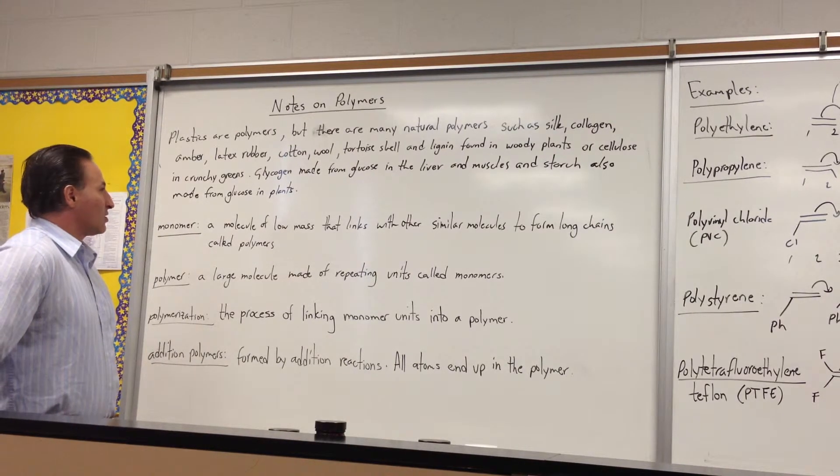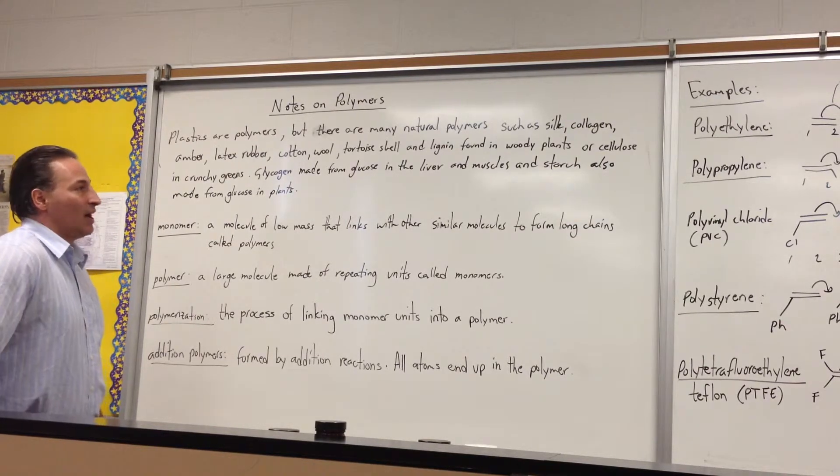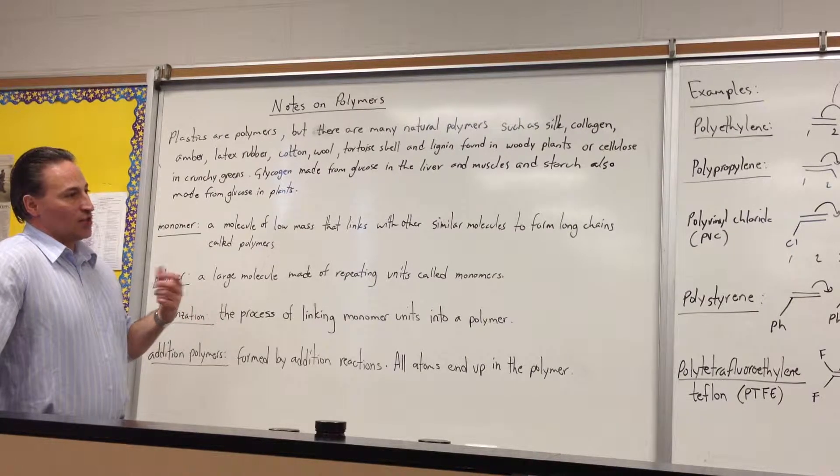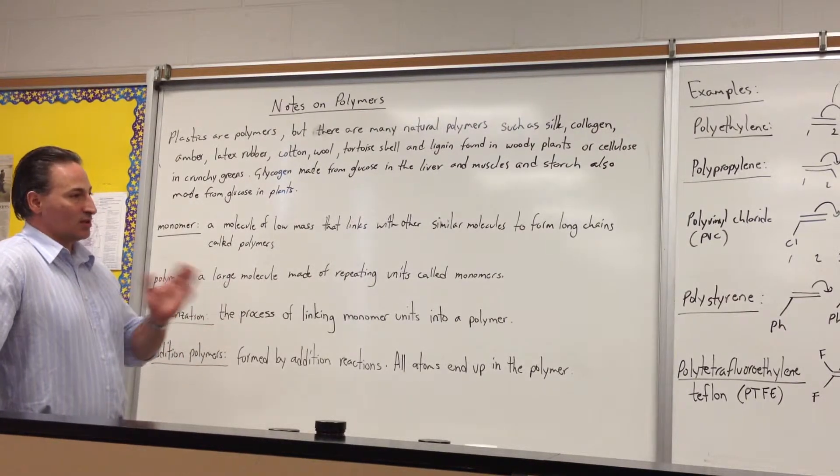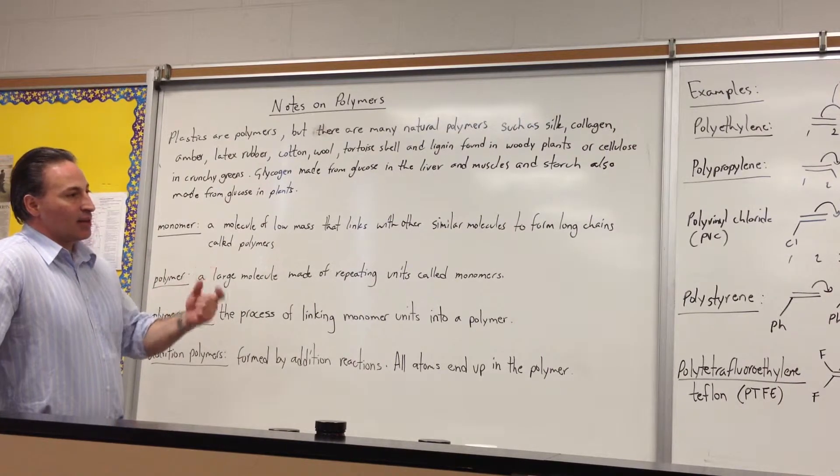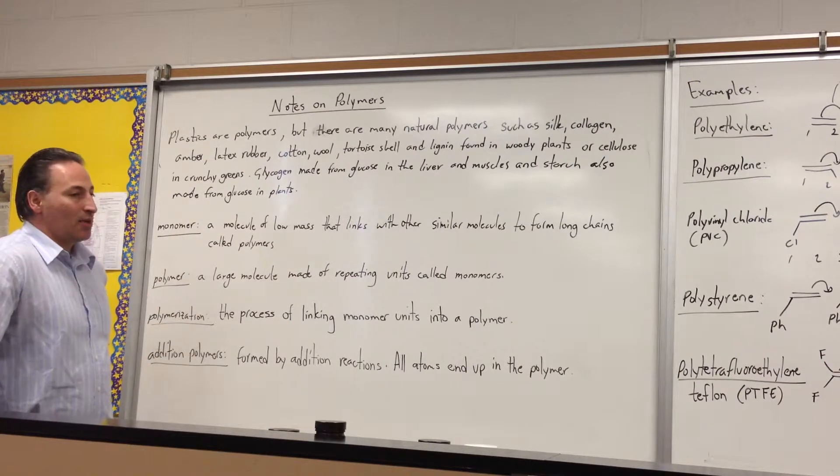Glycogen made from glucose in the liver and muscles, starch also made from glucose in plants. They're all polymers, meaning they are molecules that are long chains, or sometimes they're continuous, single chain, but they're made by linking together repeating units of the same small molecule. Which brings us to the first definition, which is a monomer.